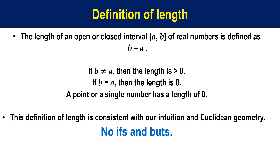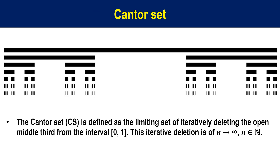There should be no ifs and buts, and I hope you stick to this definition to the end of the discussion. The Cantor set is defined as the limiting set of iteratively deleting the open middle third from the interval 0 and 1.